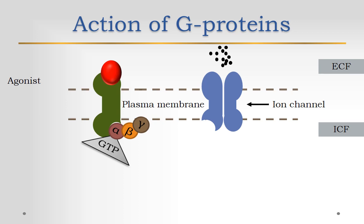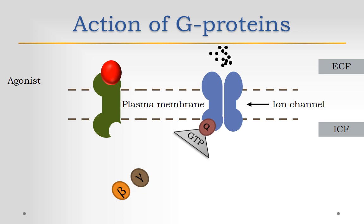That is called GDP-GTP exchange. Binding of GTP activates the alpha subunit and ultimately dissociates as the alpha-GTP unit and the remaining beta and gamma subunits. The free alpha-GTP subunit then activates the effector or the target cells. These may be enzymes or ion channels. In this figure, I am showing you the effects of the alpha-GTP free subunit on the ion channel.